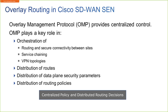As soon as our DTLS connections come up from our V-Edge devices to our V-Smart controllers, we establish those OMP peerings, and they get automatically created. It's a centralized policy and distributed routing decision process. OMP provides the orchestration of routing and secure connectivity between the sites, service chaining, different VPN topologies, distribution of routes, distribution of data plane security parameters, and distribution of routing policies. OMP is much more than a traditional routing protocol — it allows us to exchange information that's important for the topology and SD-WAN fabric to be built.